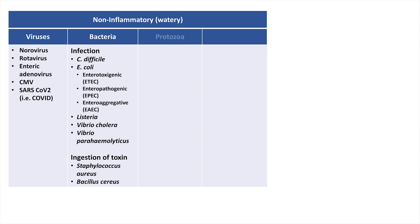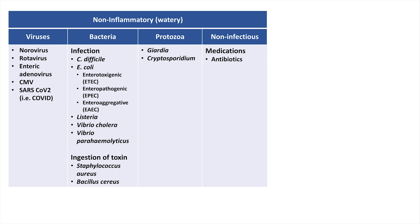Although a large number of protozoa can cause diarrhea, the most common are Giardia and Cryptosporidium. Not all non-inflammatory diarrhea is infectious in origin. Non-infectious causes include medications — the most commonly implicated are antibiotics. Antibiotic-associated diarrhea is caused by disruption of normal gut flora, but it does not necessarily lead to C. diff colitis. Specifically, most diarrhea triggered by antibiotics is not C. diff, even though it is important to test for C. diff in this situation.